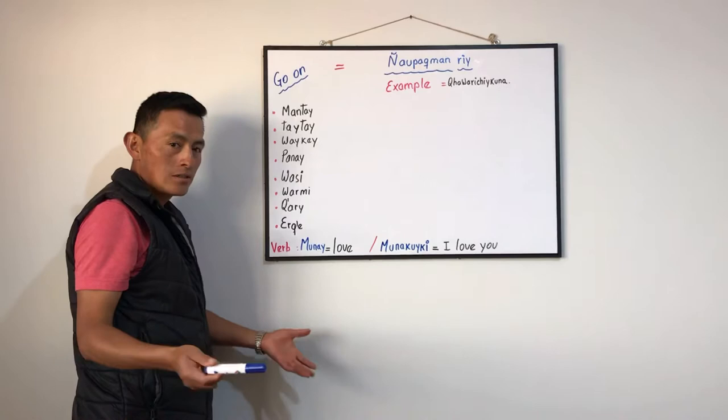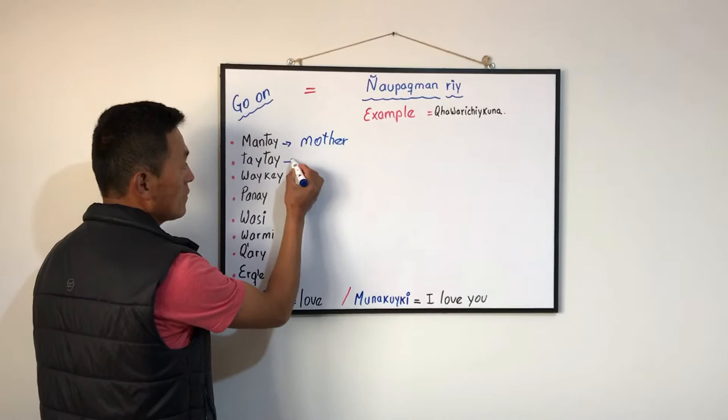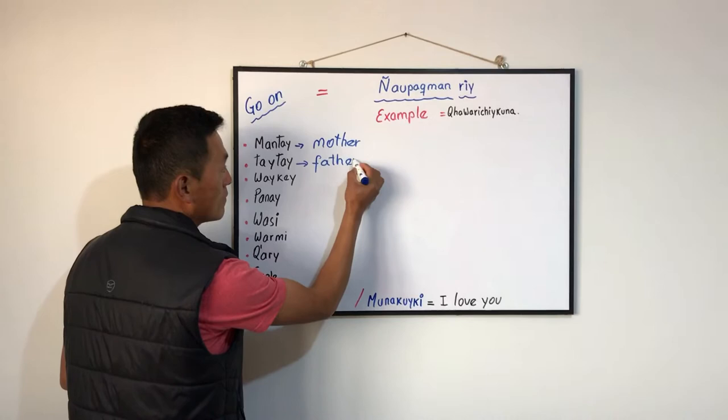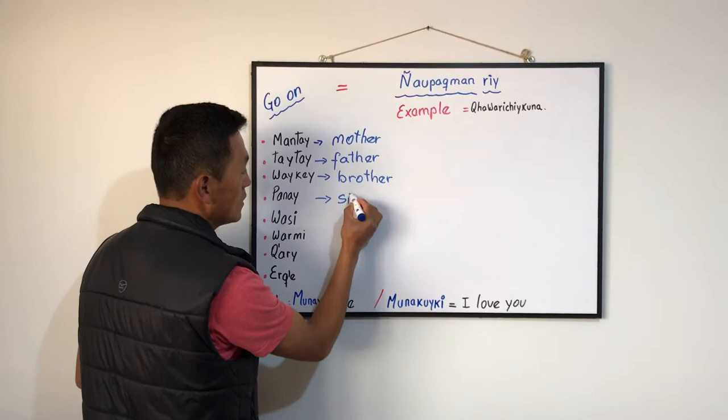What are those words? Mantai — mother. Taitai — father. Waikei — brother.